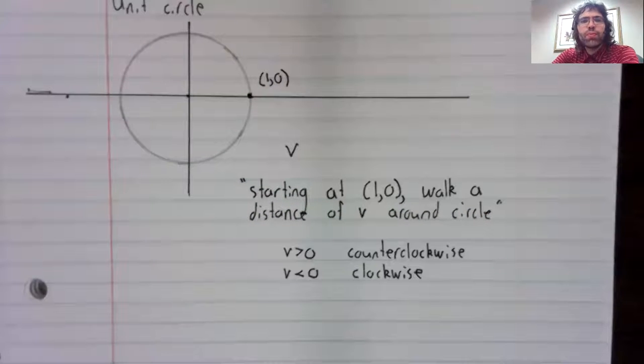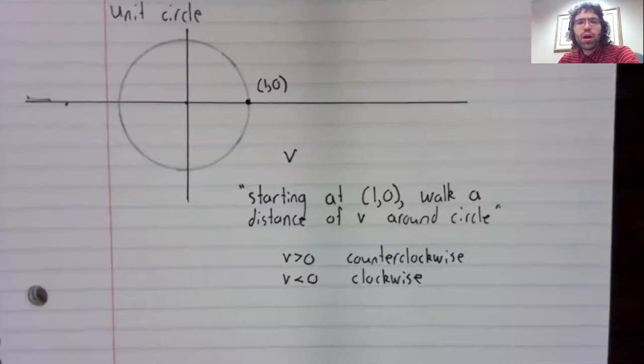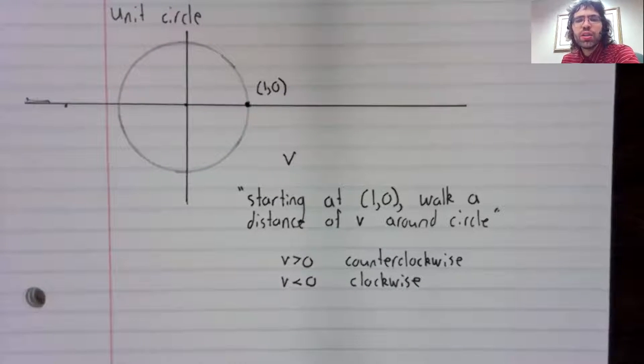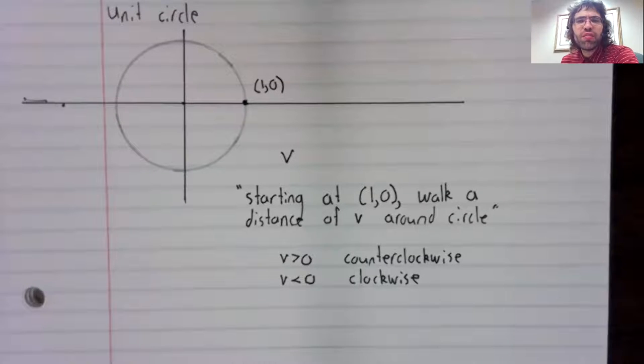You can walk either clockwise or counterclockwise, depending on whether V is positive or negative. If V is positive, counterclockwise. If V is negative, clockwise.